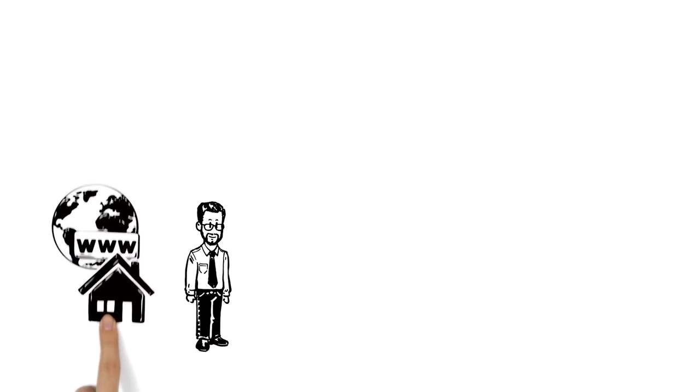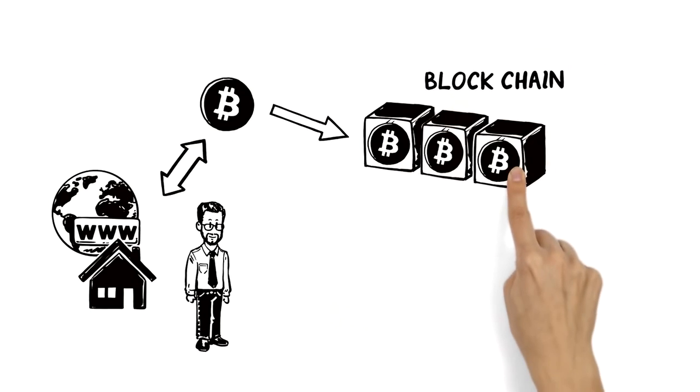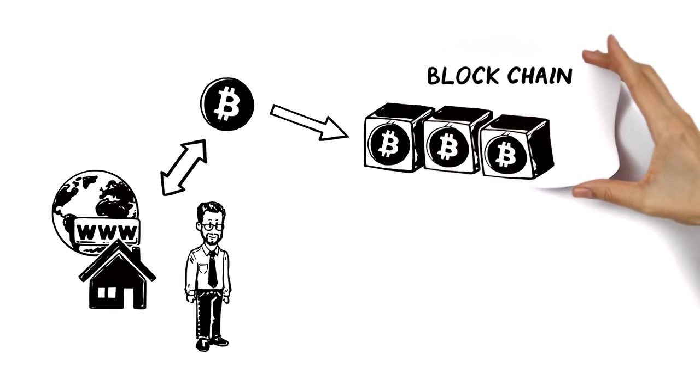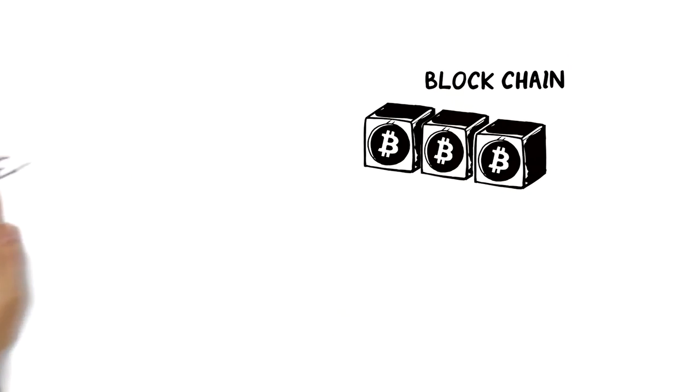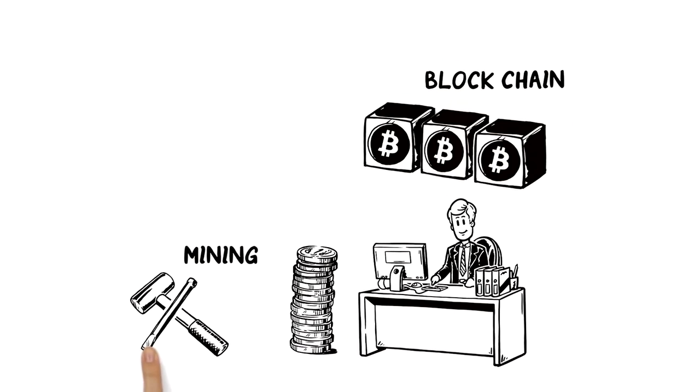Users each have their own address from which they can send and receive Bitcoins. A collection or block of these transactions is then added to the blockchain, Bitcoin's equivalent of a bank's ledger. Users that maintain this form of accounting are rewarded with new Bitcoins. This is known as mining.